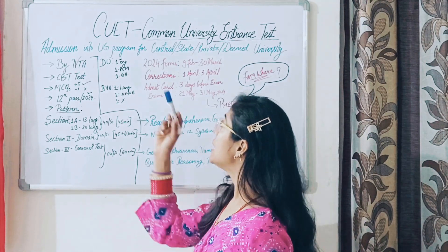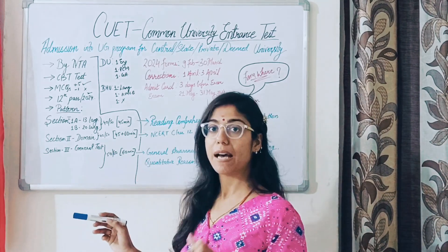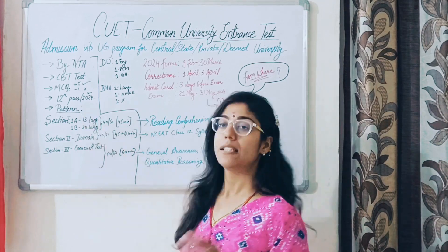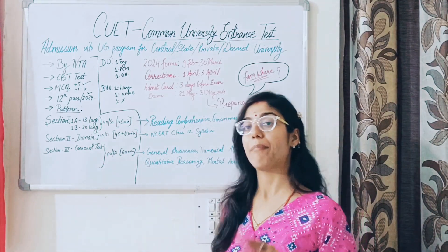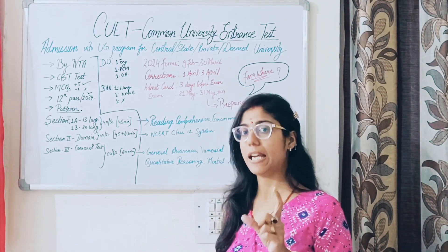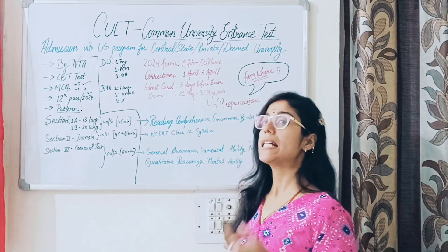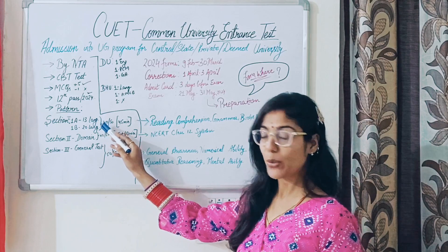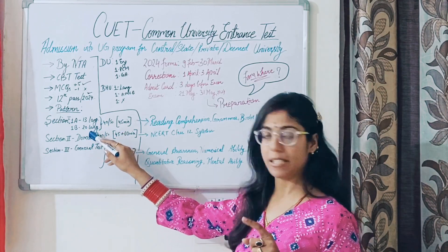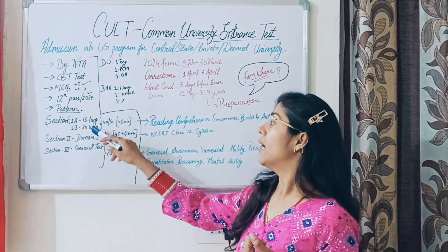Agar aapko CUET ka exam dena hai, toh uski eligibility class twelfth pass hoti hai. Isme koi minimum percent nahi hai, bas twelfth pass hona chahiye. Ab pattern ki baat karein — aapka exam teen slots pe hoga. Exam ka pattern hai: Section 1a aur 1b, jo basically language ka section hai. Section 1a mein 13 languages hoti hai aur Section 1b mein 20 languages hoti hai.